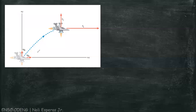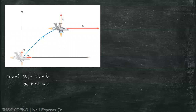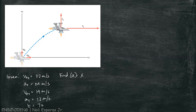Here is our illustration. Let's state the given. We have the initial velocity for the x-direction, which is 22 meters per second, and acceleration of 24 meters per second squared. For the y-direction, we have the initial velocity v0y of 14 meters per second and acceleration of 12 meters per second squared, at a time of 7 seconds. We are looking for (a) the x and y components of the displacement.